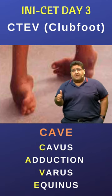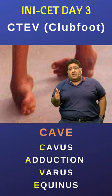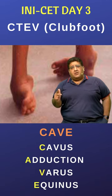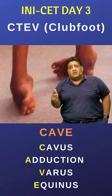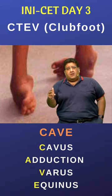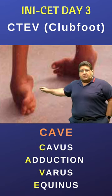So C for cavus, A for adduction, V — it's not simply varus, it is inversion, where adduction plus inversion together are commonly referred to as varus — and E for equinus.